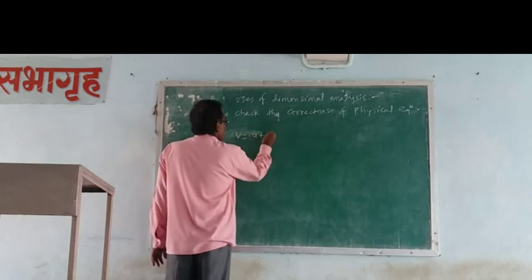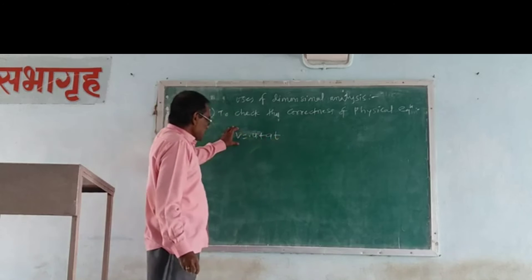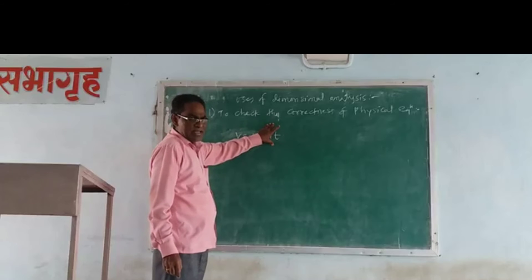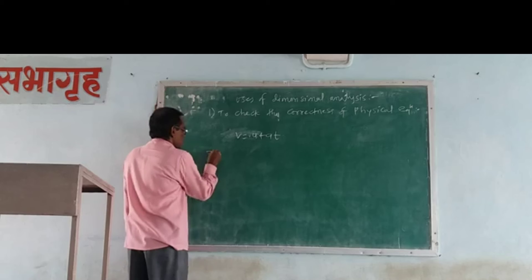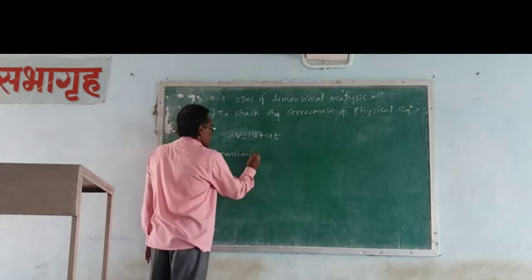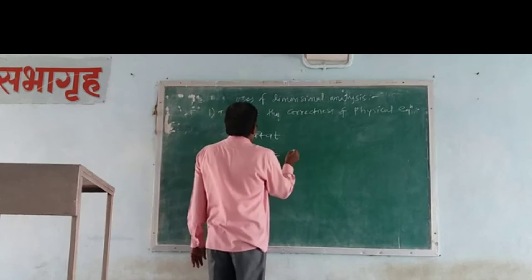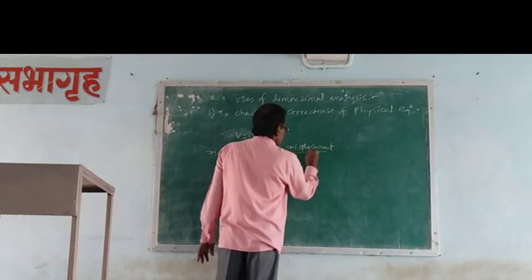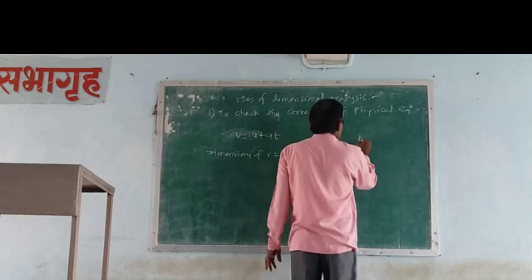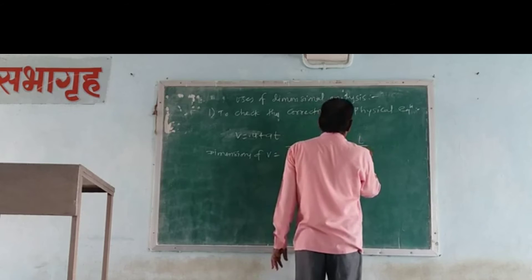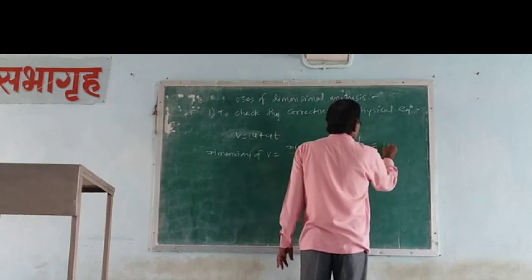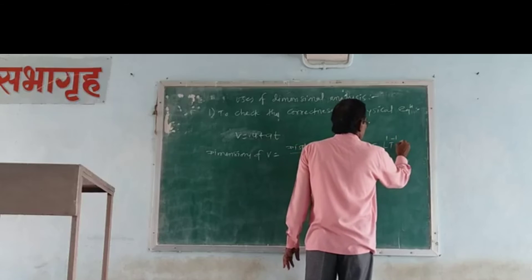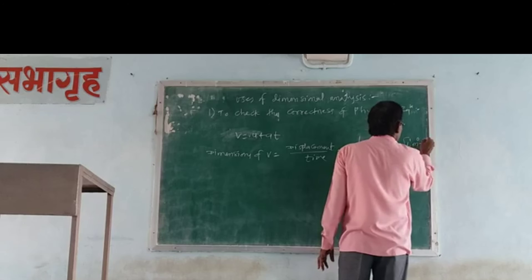V is equal to U plus AT. We check left-hand side and right-hand side dimensions. Dimensions of V: displacement divided by time, which is L divided by T, equal to L1 T minus 1, written as L1 M0 T minus 1.